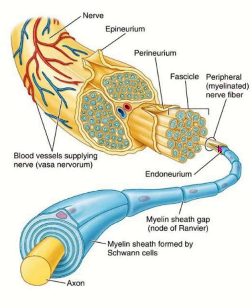So this is the structure of the peripheral nerve. A nerve fiber is surrounded by myelination done by Schwann cells, and around it is the endoneurium. The collection of nerve fibers is known as a nerve bundle, which is surrounded by perineurium. The collection of nerve bundles forms the trunk of the nerve, which is surrounded by epineurium.